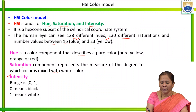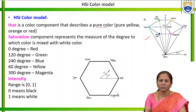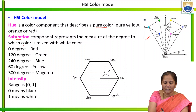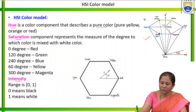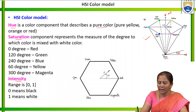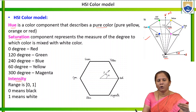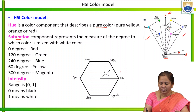Saturation represents the measure of the degree to which a color is mixed with white — how much pure color should be mixed with white to generate another color. Intensity ranges from 0 to 1, where 0 represents black and 1 represents white; values between represent shades. This is represented as a hex cone — a cylindrical coordinate system. In this system, S is saturation, H is hue, and there is a V or I value for intensity, with black at one end and white at the other.